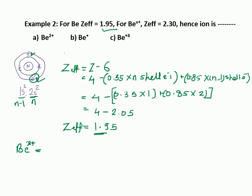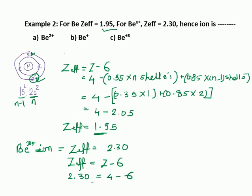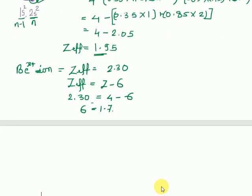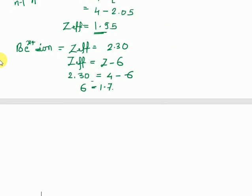Now for the beryllium ion where Z_eff = 2.30: using Z_eff = Z − σ, we get 2.30 = 4 − σ, so σ = 1.70. We need to find which beryllium ion gives sigma = 1.70. For beryllium+ (Be⁺), the electronic configuration is 1s² 2s¹, with the 2s¹ as the n shell and 1s² as the n−1 shell.